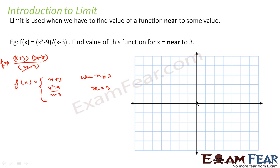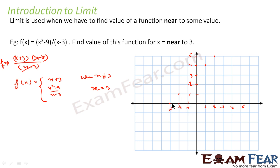Let's plot this graph. At x = 0, y = 0 + 3 = 3. At x = 1, y = 1 + 3 = 4. At x = 2, y = 2 + 3 = 5. Similarly, at x = -1, y = 2; at x = -2, y = 1; at x = -3, y = 0. So we get a straight line, but at x = 3 the value is not defined.